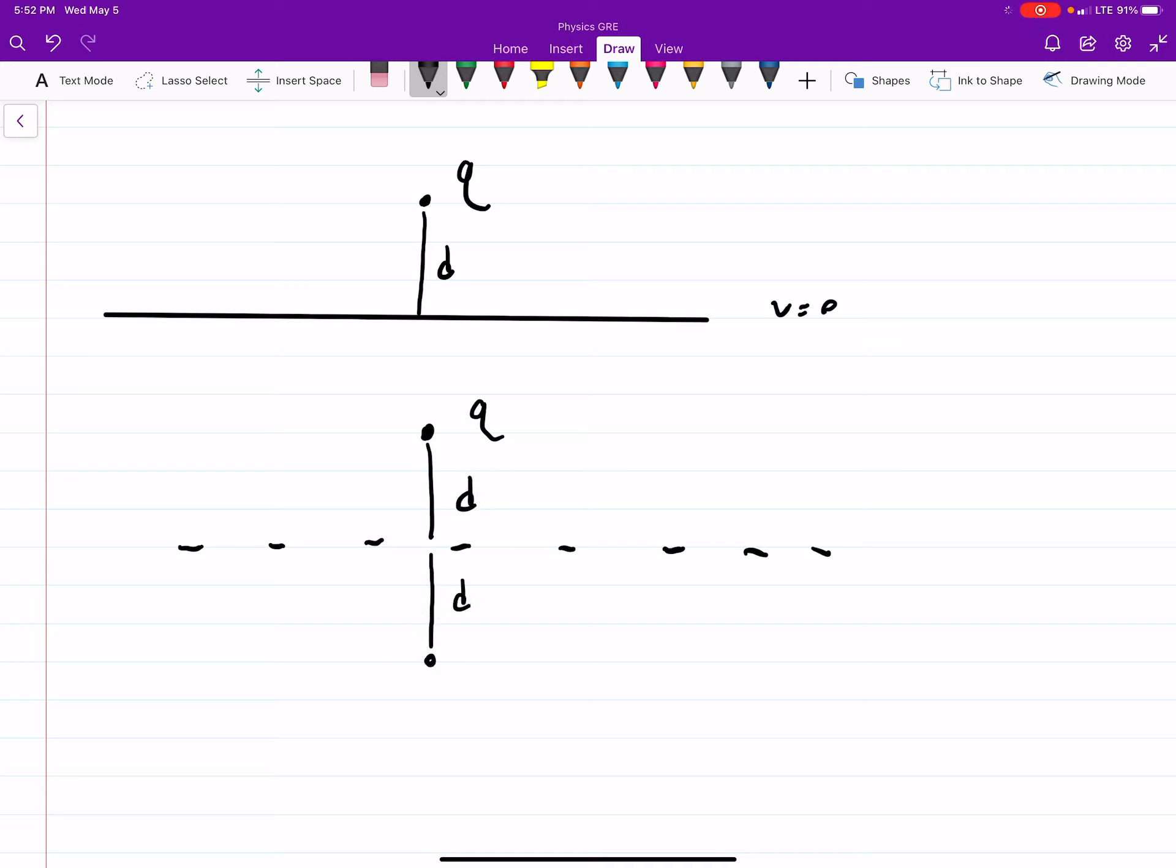Still a distance d from where the conducting plane was, and a distance d below, we're going to have a negative charge q. So this is how we do method of imaging for a conducting plane. We're just mirroring our charge over that plane.